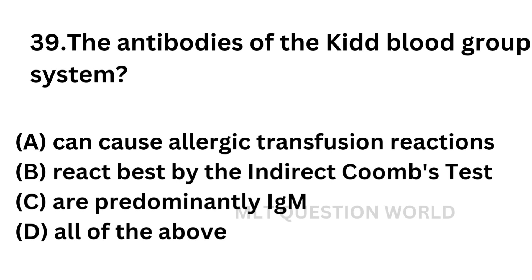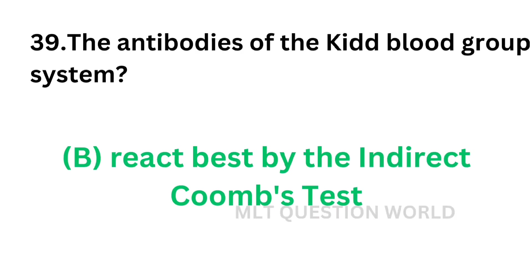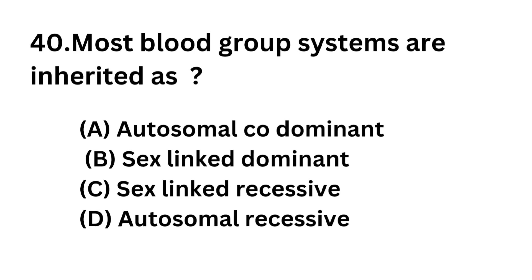Question No. 39. The antibodies of the Kidd blood group system. Option A: Can cause allergic transfusion reactions. Option B: React best by indirect Coombs test. Option C: Are predominantly IgM. Option D: All of the above. Anti-JKA and anti-JKB can be detected by anti-human globulin test. The correct answer is Option B — react best by the indirect Coombs test.